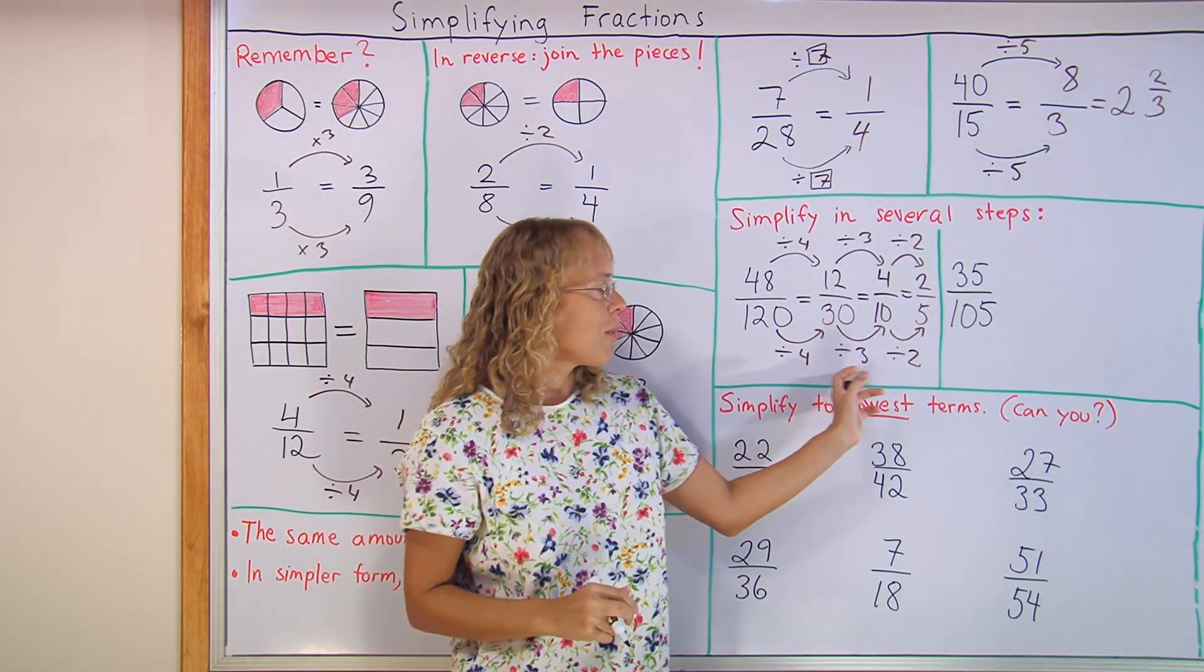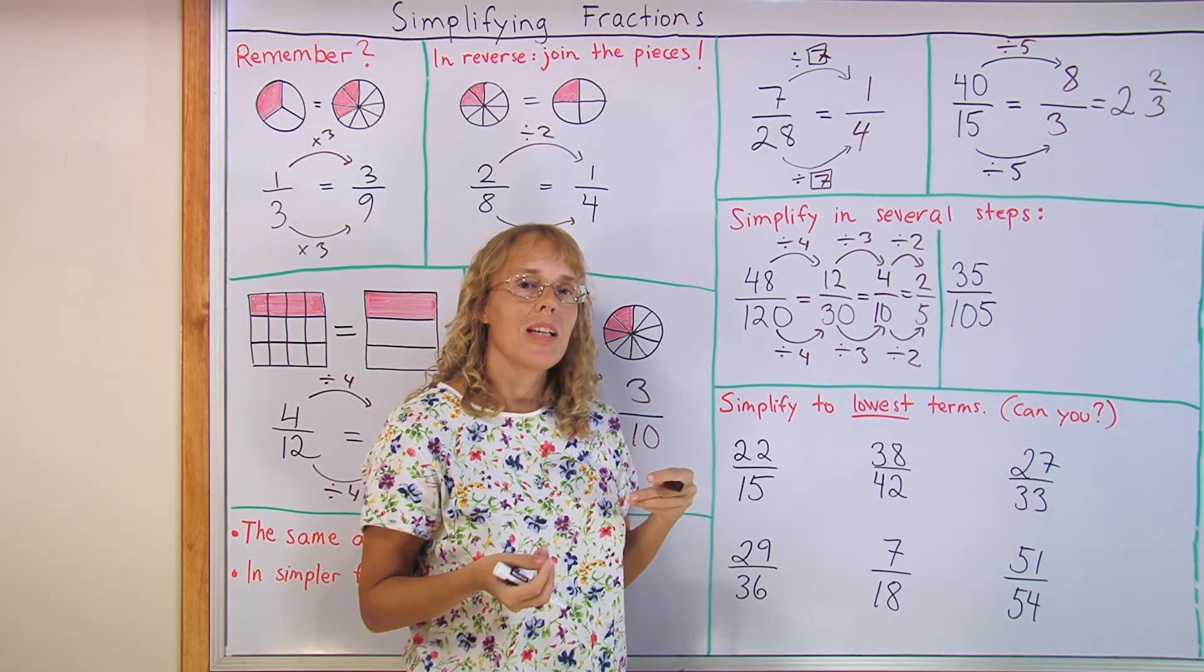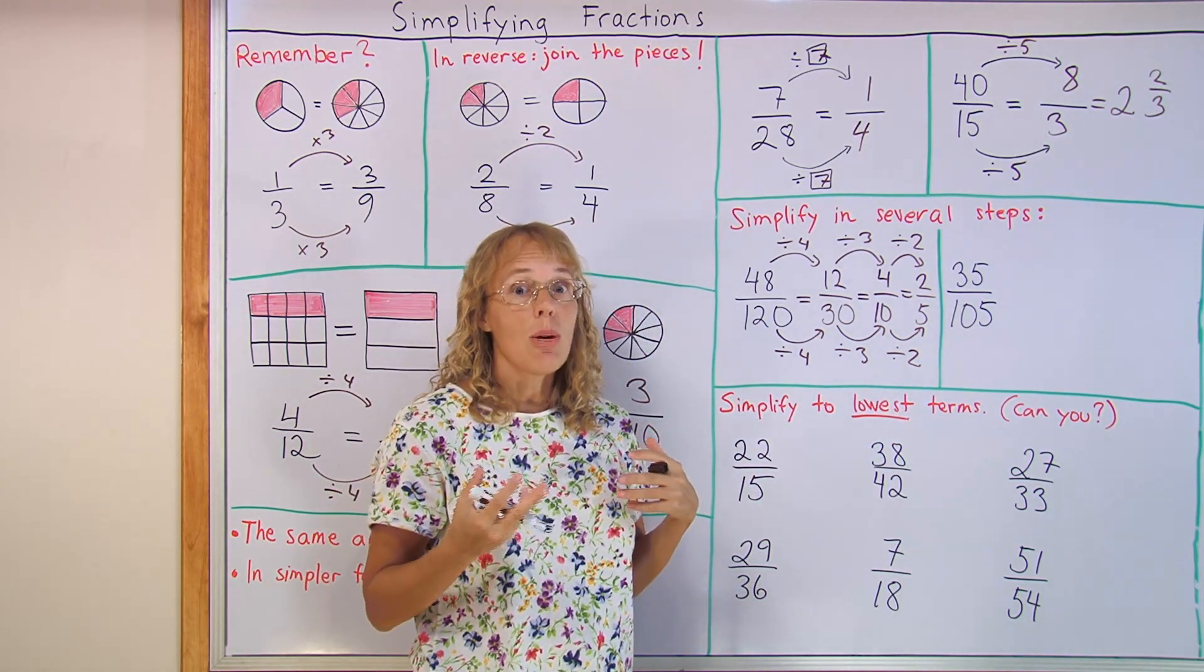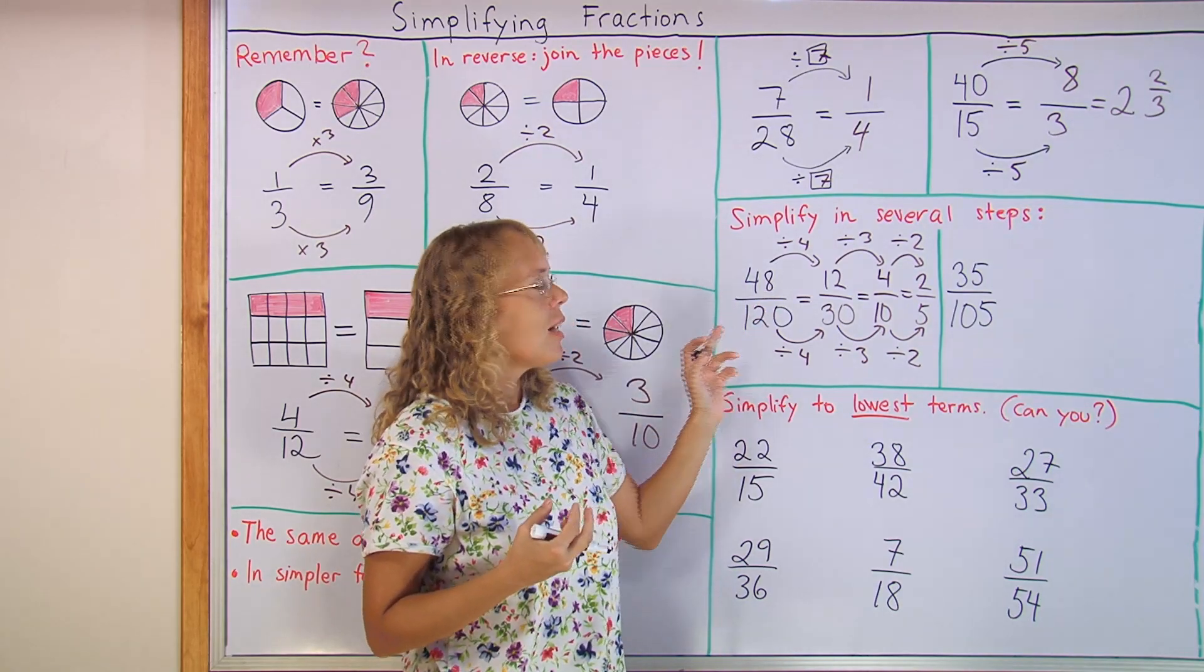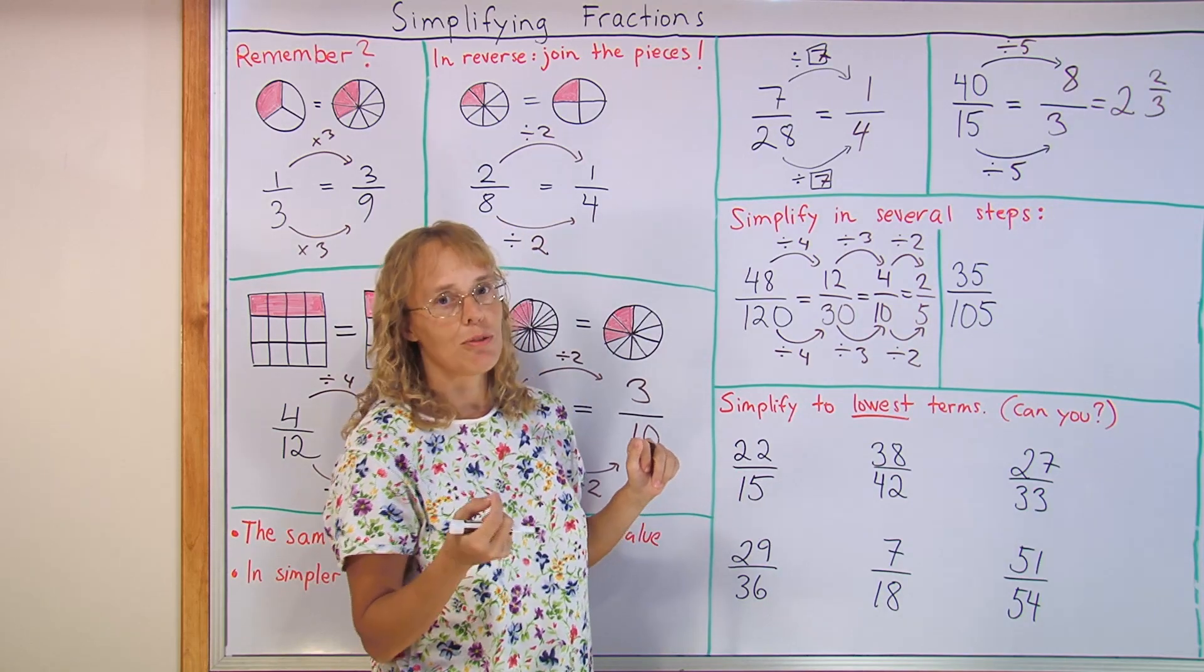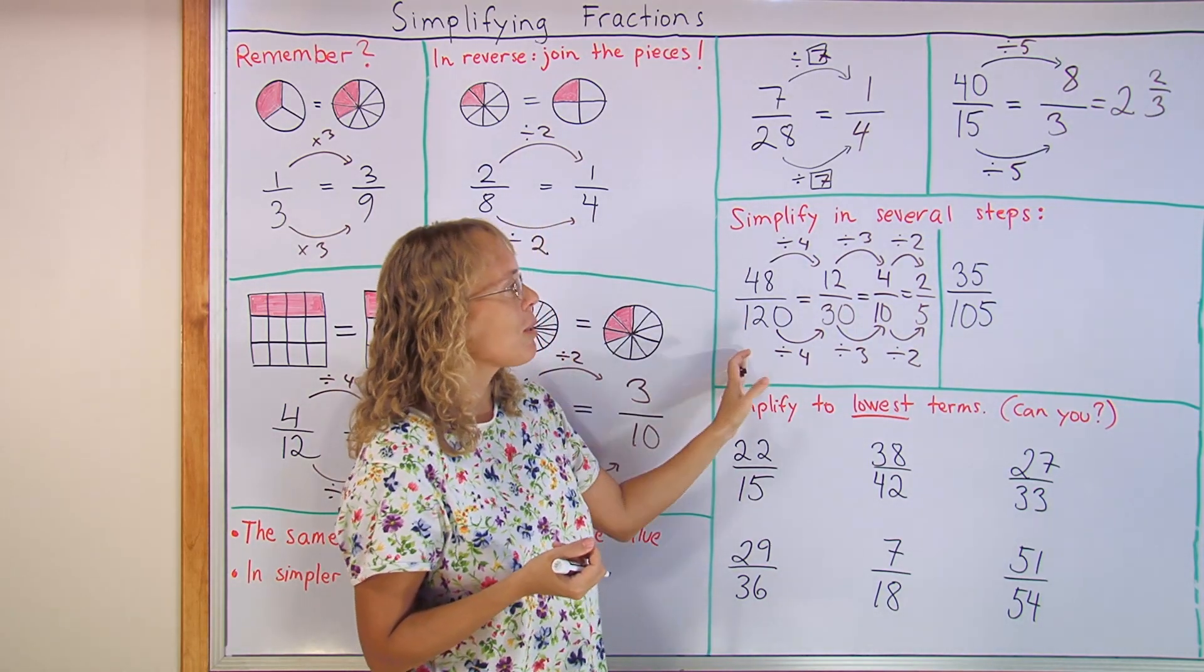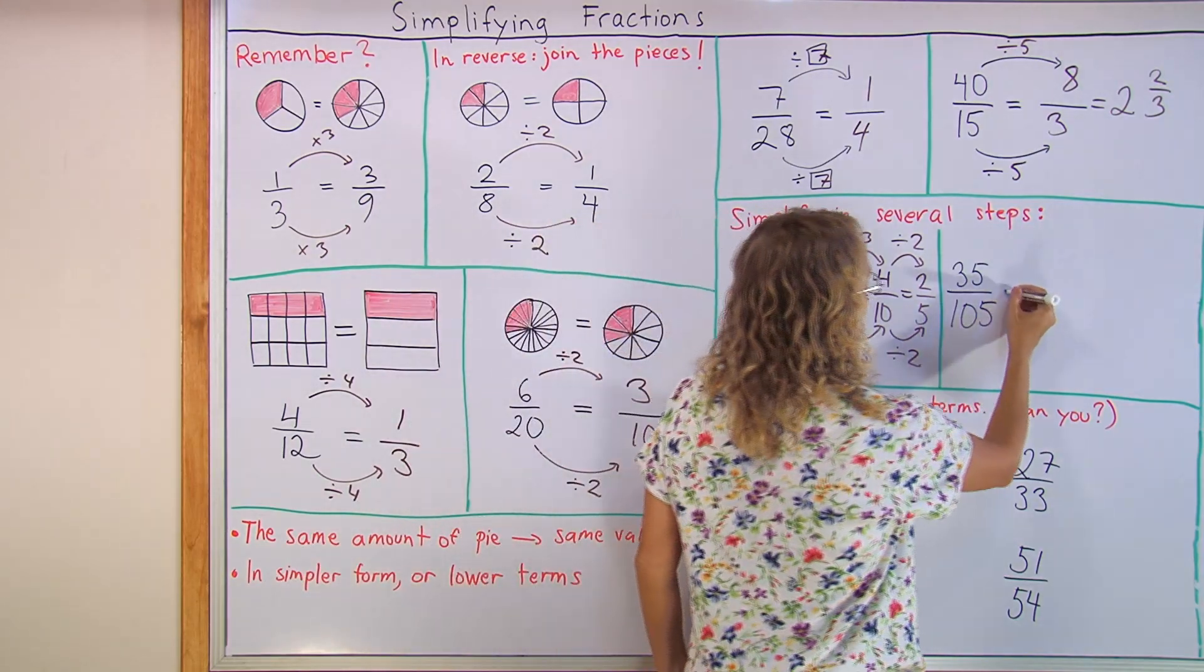And if I multiply this four times three times two, it's twenty-four. That would have been, that is the greatest common factor of these two numbers. And I could have done this whole thing in single step if I had divided by twenty-four. But it's not so simple to see that you could divide by twenty-four.